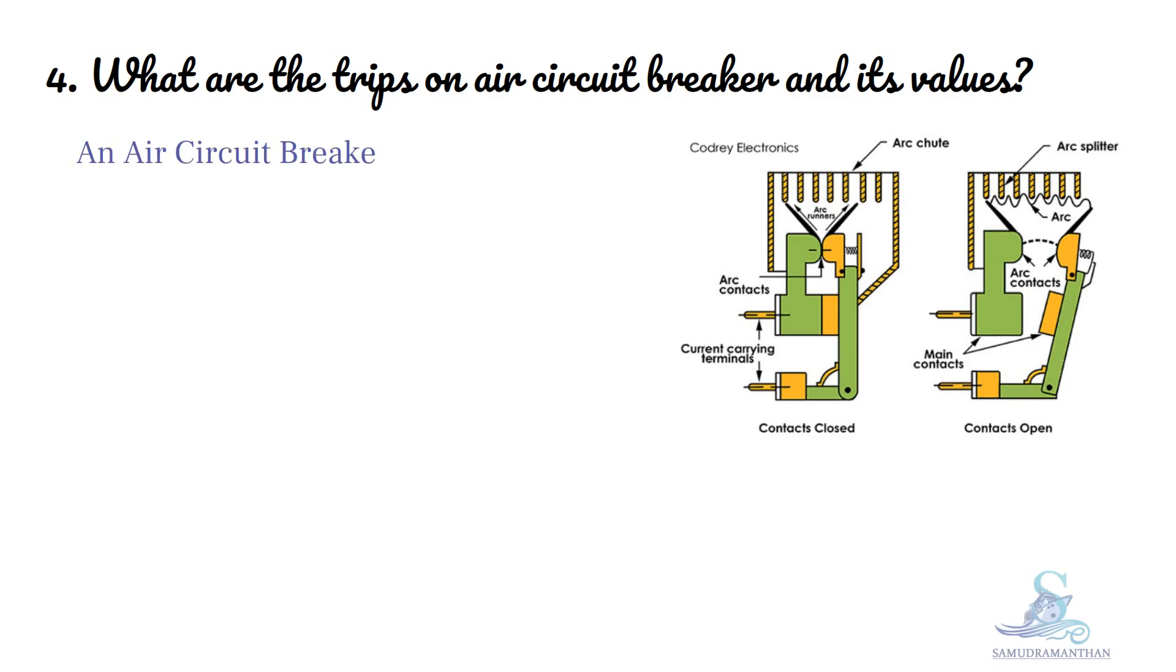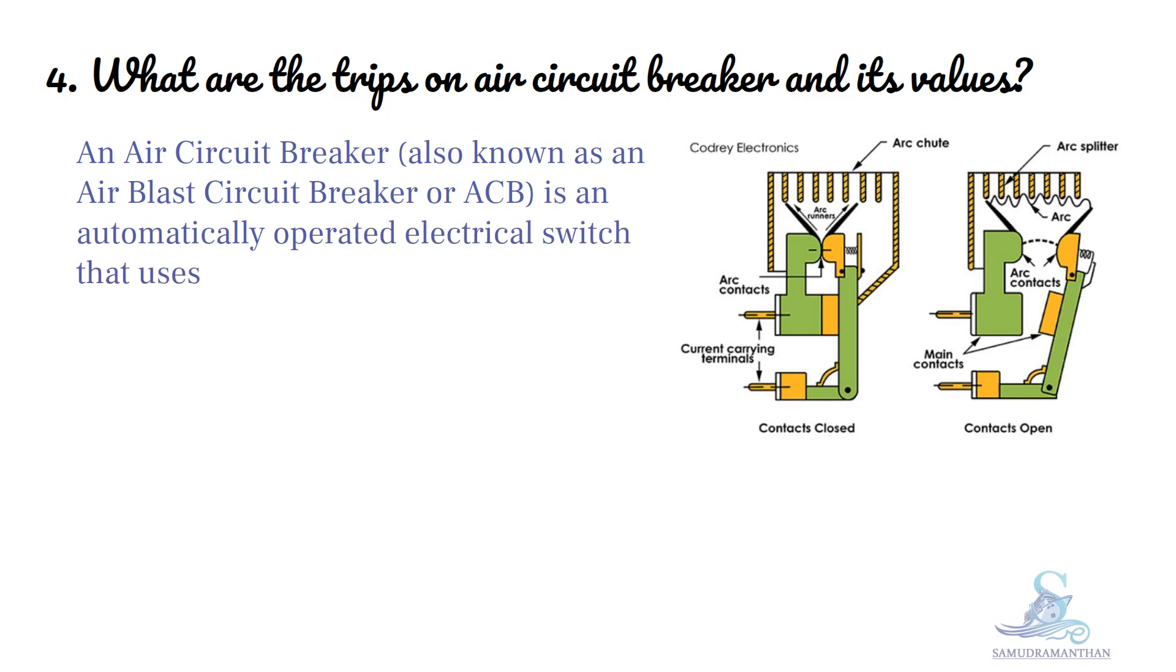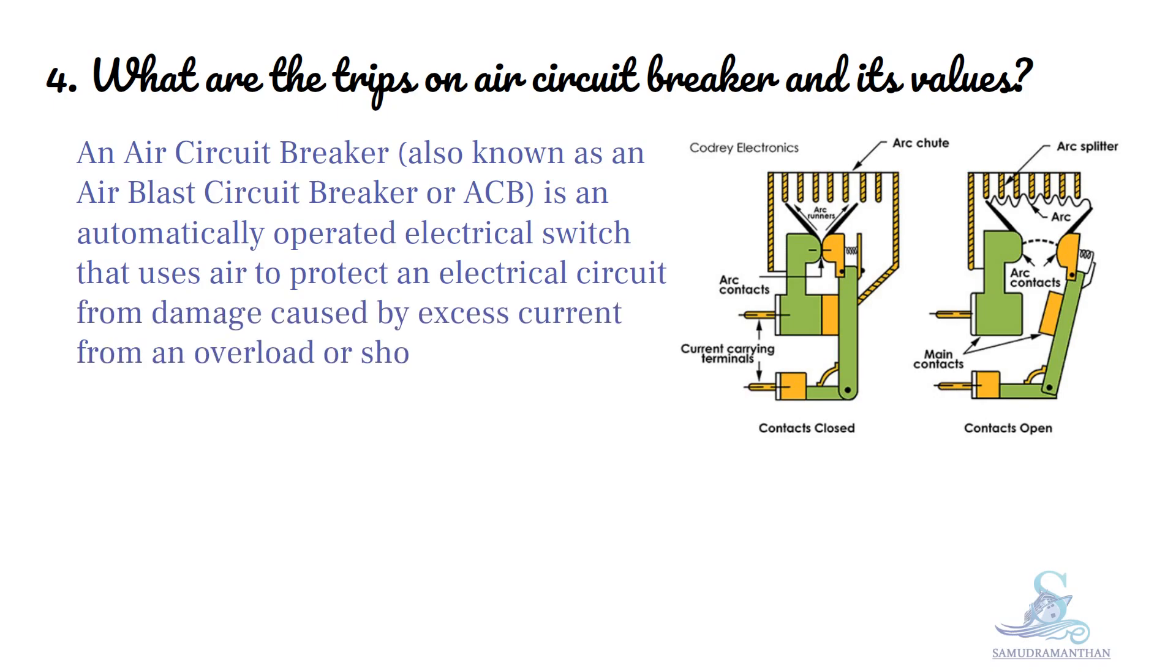An air circuit breaker, also known as an air blast circuit breaker or ACB, is an automatically operated electrical switch that uses air to protect an electrical circuit from damage caused by excess current from an overload or short circuit. Its primary function is to interrupt current flow after a fault is detected.